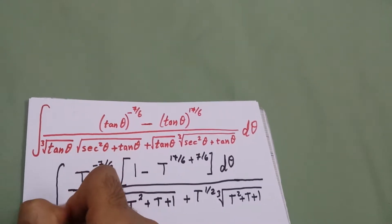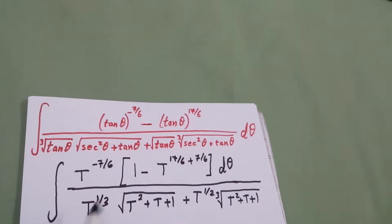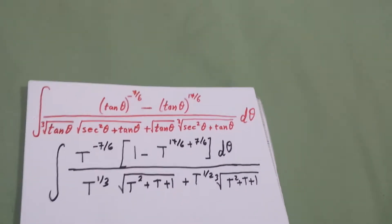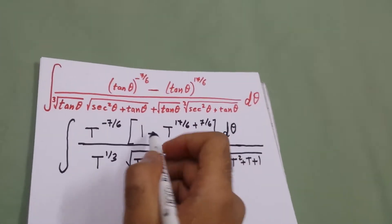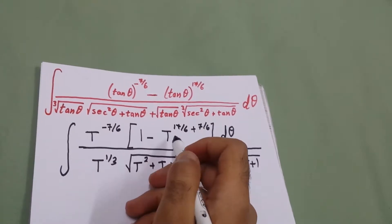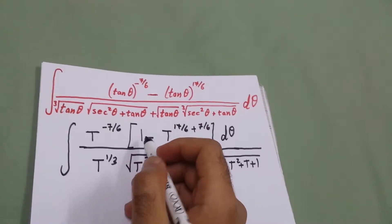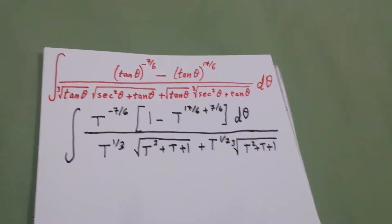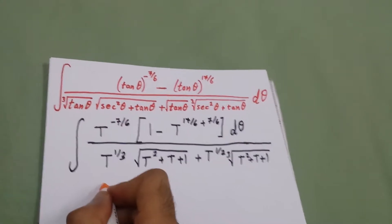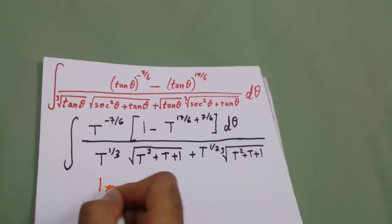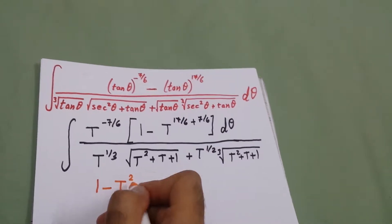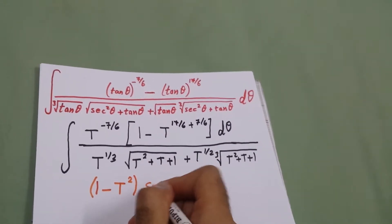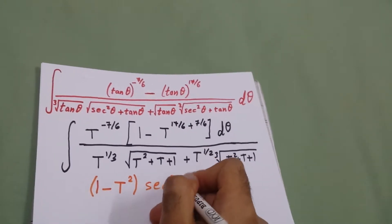After that we will multiply this in the denominator and factor it. It will be 1 minus tan squared times 1 plus tan squared, which is secant squared. So it will be (1 minus tan squared) times (1 plus tan squared), which is secant squared.